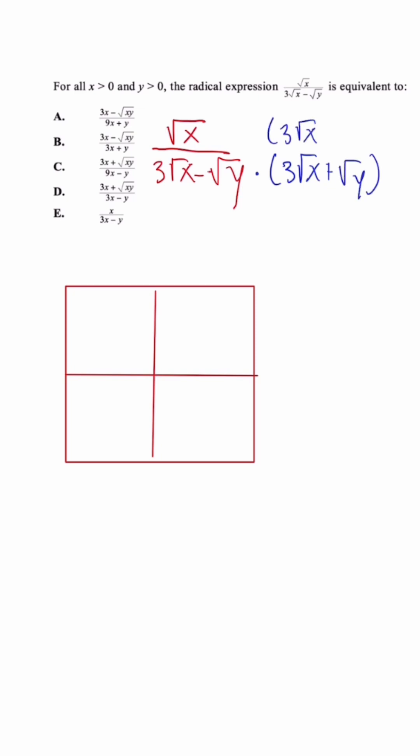So after we set this up, the numerator, once we multiply, we're going to get 3x plus radical xy.